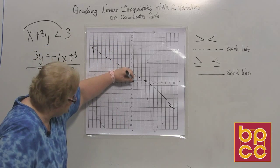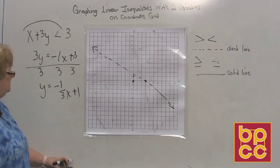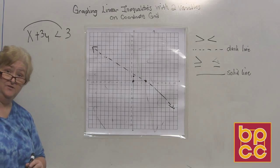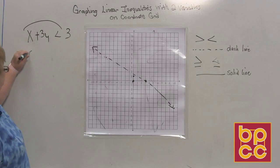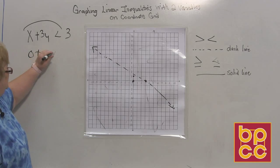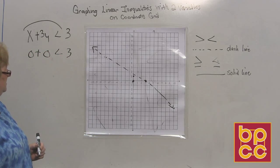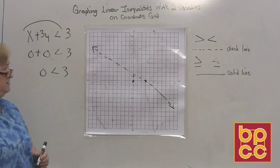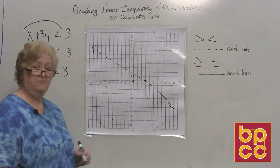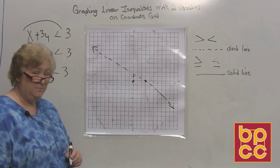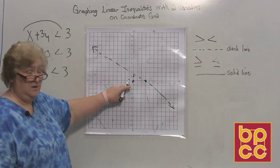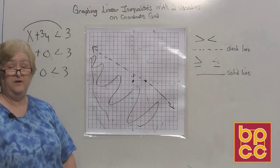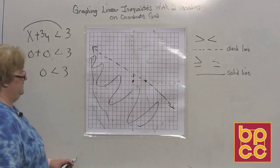I start at 1 on the y, then go down 1 and to the right 3. Down 1, to the right 1, 2, 3. Before drawing the line I confirmed we need a dashed line. Now here is our (0, 0) that we're going to test. Going back to the original: x is 0 plus 3 times 0 is 0, less than 3. Zero is less than 3 — that is true! When we tested (0, 0) we got a true statement, so (0, 0) gets to be covered and everything on that side gets shaded.